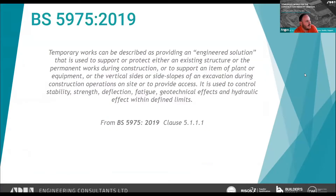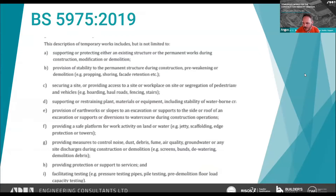Regarding BS5975 — the 2008 version barely mentioned demolition, but the 2019 version gives it considerable coverage. The standard defines temporary works quite broadly. Within 5975:2019, demolition appears in a non-exhaustive list of applications, including supporting or protecting either an existing structure or the permanent works during construction, modification, or demolition, and providing stability during pre-weakening or demolition.